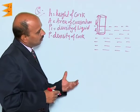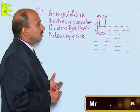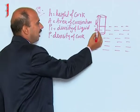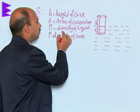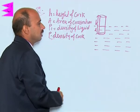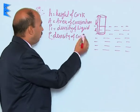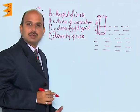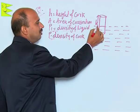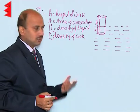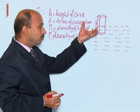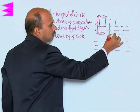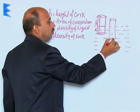This is again a question from the NCRT book. There is a cylindrical shape cork whose height is h and density is rho. It is put into a liquid where it is floating, and the density of the liquid is rho1. A is the area of cross-section of the cylinder. The cylinder is floating with length l inside the liquid — that is the equilibrium position. Now, when this cylinder is pushed downward from equilibrium by a small distance y,